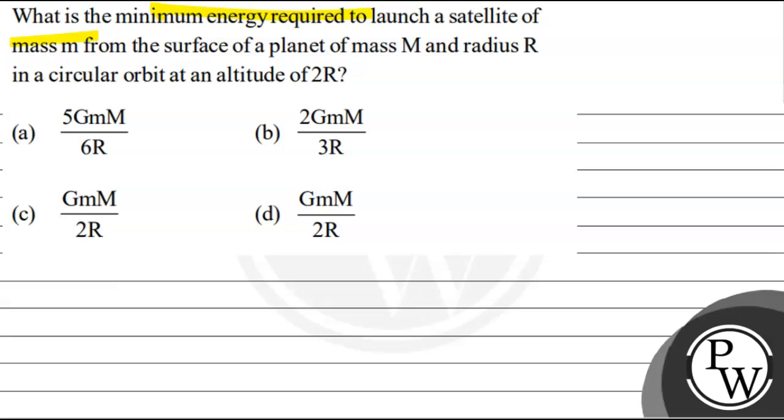So, we have to launch a satellite which is small m, and the planet of mass M has radius R, and our satellite is at altitude 2R. So, let's start.